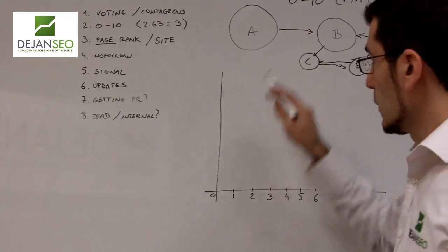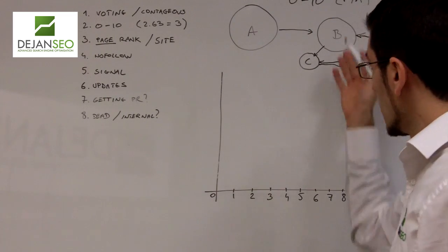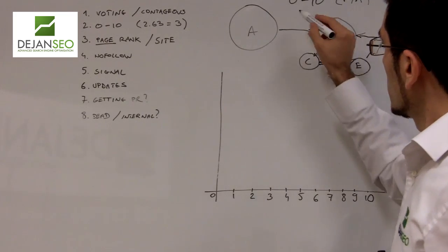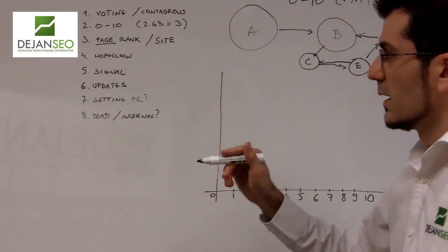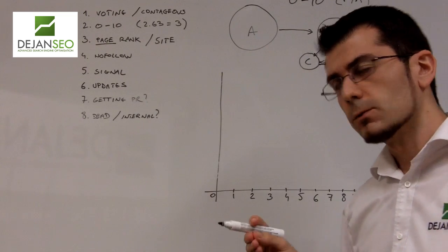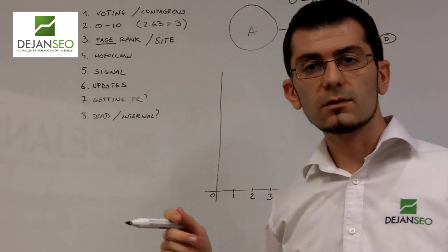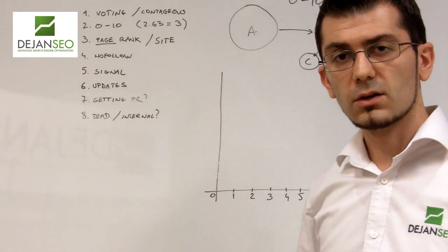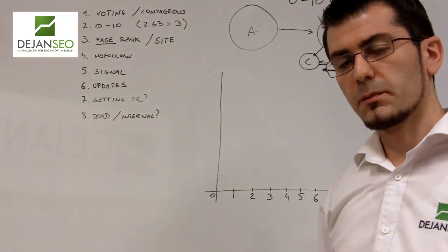So the actual PageRank scale works from 0 to 10, 10 being the best and most authoritative, 0 being the lowest on the scale. Now the actual sliding scale is not as simple as that. PageRank actually is a bit more complex and works on a finer level. So we might have a situation where a particular page has a PageRank of 2.63 which might result as appearing as PageRank 3 on our toolbar. So there's varying degrees of this strength of a particular page.